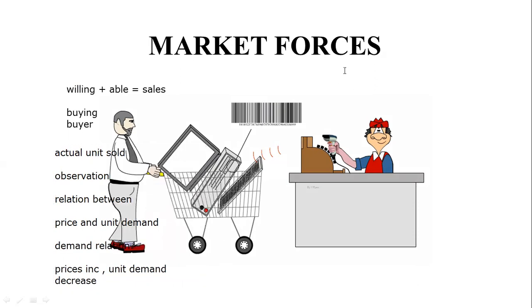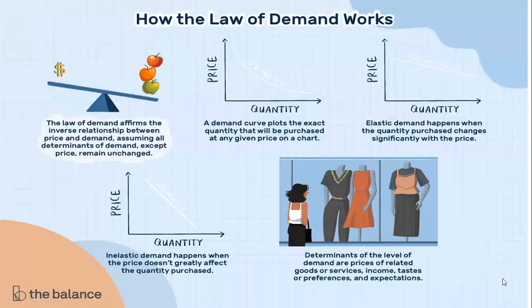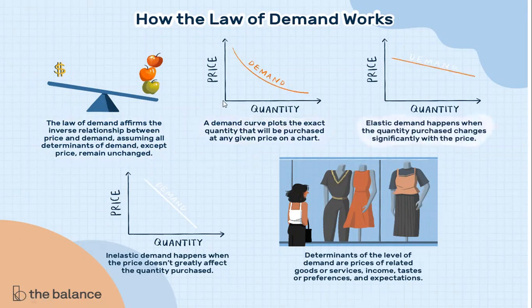Here we introduce the concept of the buyers, and then we're going to look at the supplier. Look here at how the law of demand works. In this paragraph you will find the relation between the price and the units. The curve — which can be a curve or a straight line — represents the importance of the product.